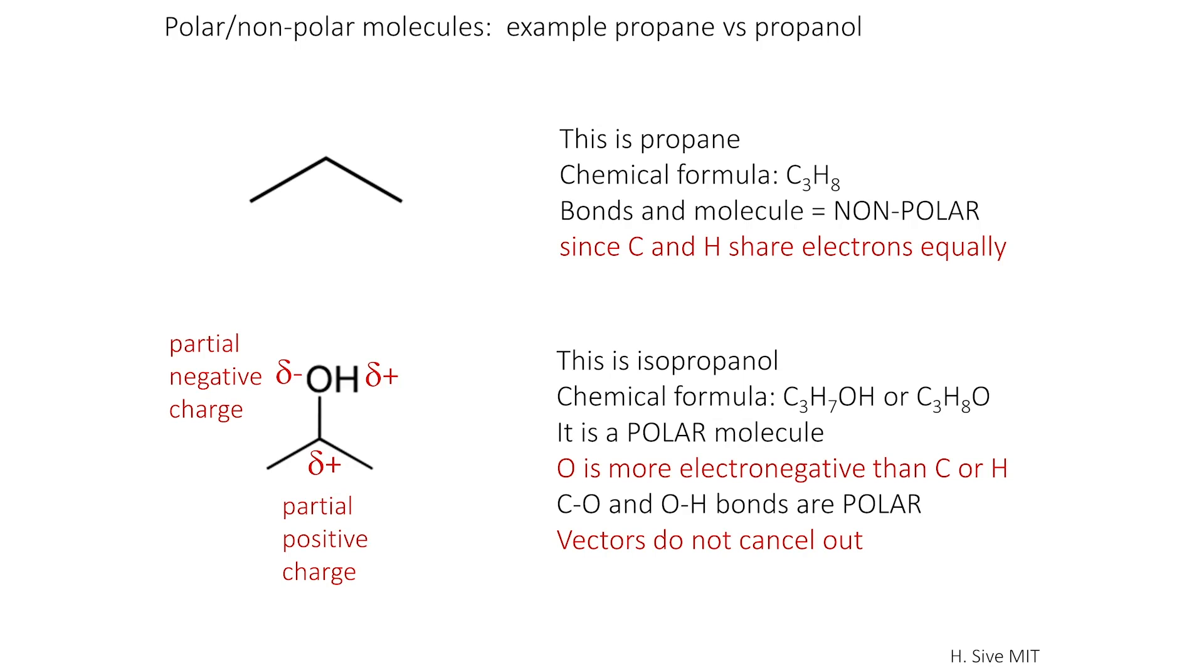On the other hand, isopropanol, you can see, has a hydroxyl group added to it. There is that oxygen which is highly electronegative. It will be pulling electrons away from the carbons and the hydrogens. Therefore, you get a partial negative charge or more negative character in the hydroxyl, in the oxygen part of the molecule. And this molecule is polar.